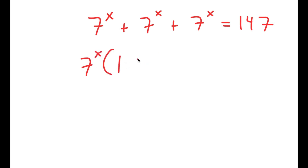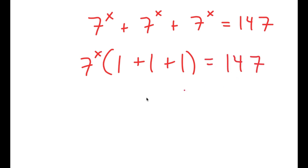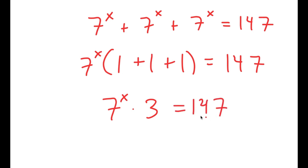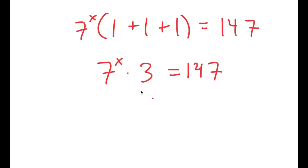So I get 7 to the power of x times 1 plus 1 plus 1 is equal to 147. So 7 to the power of x times 3 is equal to 147. Now from here, I'm going to divide both sides by 3.